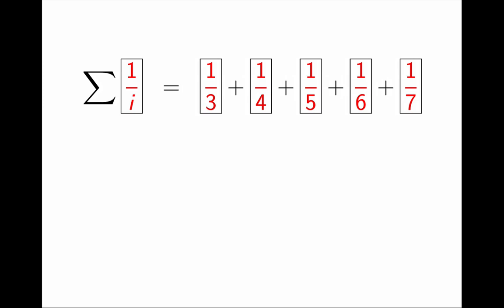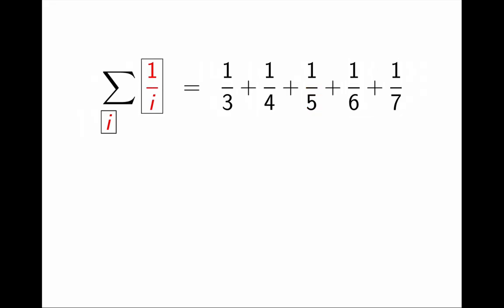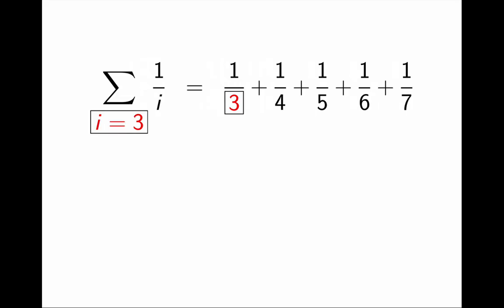I indicate this by writing an i under the sigma, to mean that i is what changes from term to term. Among all the terms, the smallest value of i, the first one, is 3. I indicate this by writing i equals 3 under the sigma. That is the first term.